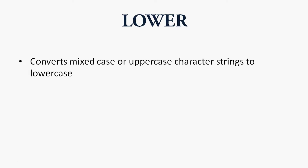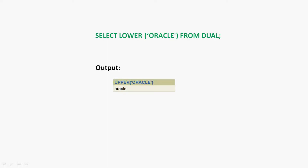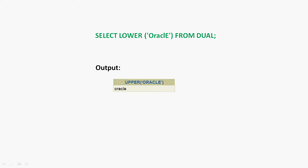Now we will go to the function LOWER. The LOWER function converts mixed case or uppercase character strings to lowercase. Here we can see an example: SELECT LOWER('ORACLE') FROM dual — the character string is given in uppercase. Here we can see the result: the string is converted to lowercase. We will see another example with a mixed case string: SELECT LOWER('Oracle') FROM dual. Here we can see the output.